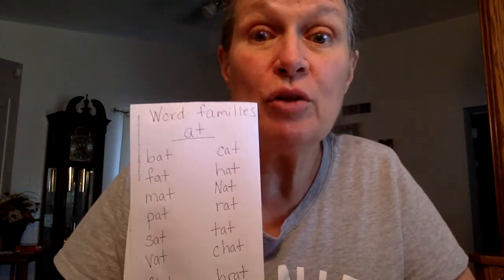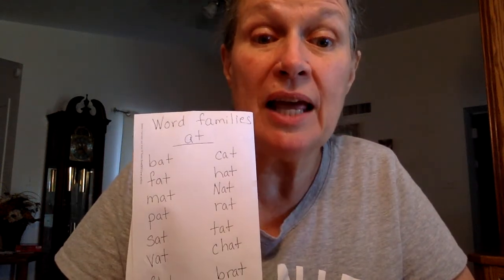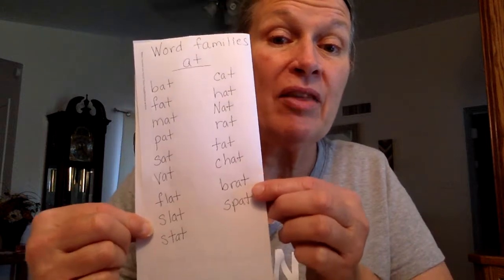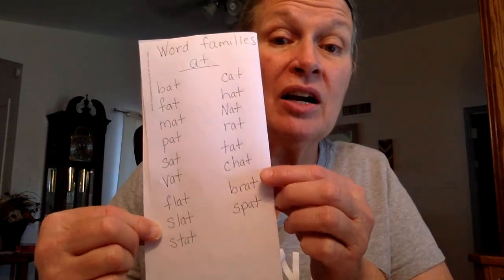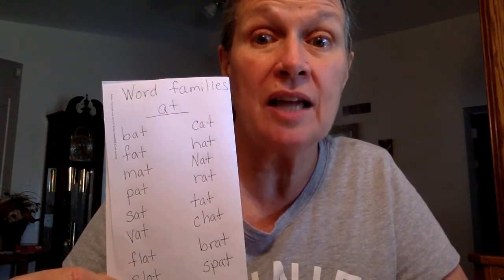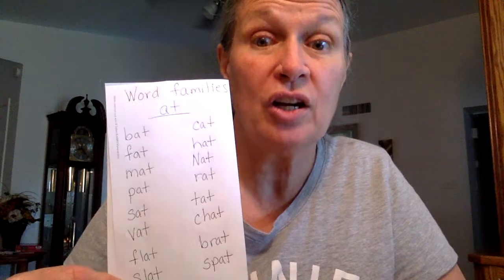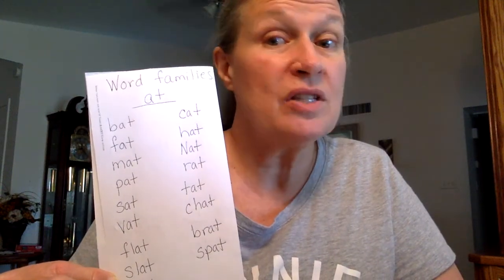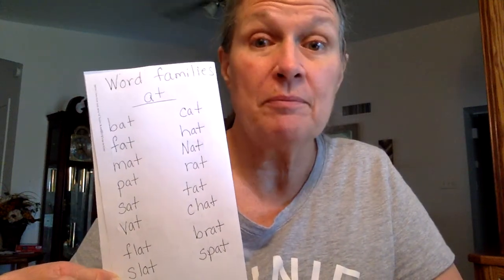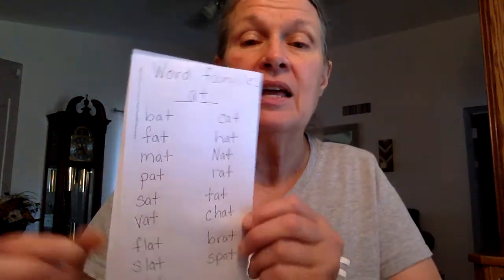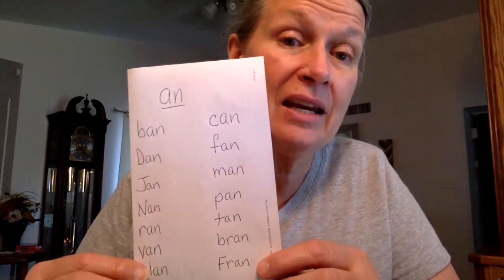Make sure you make those blends — the FL and the BR and the CH — make sure you make those sounds all together like CH or BR. Don't separate them. Make sure you make them together. The next word family is AN.